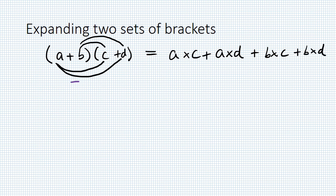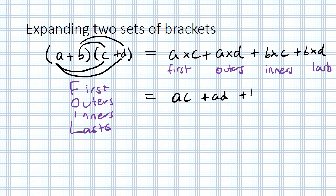Now this is our familiar FOIL: first, outers, inners, and last. These are the first, these are the outers, these are inners, and these are our last. When we simplify that, it becomes AC + AD + BC + BD.